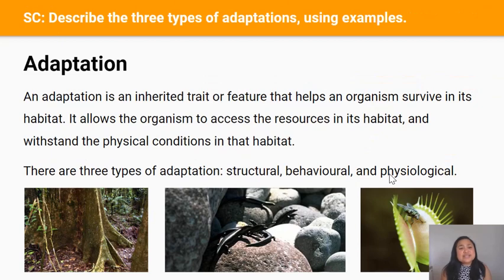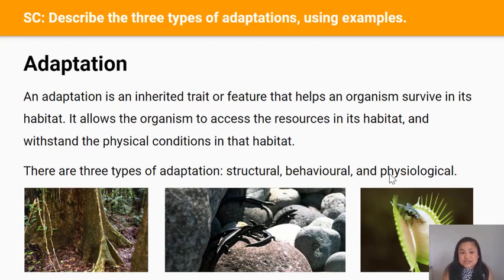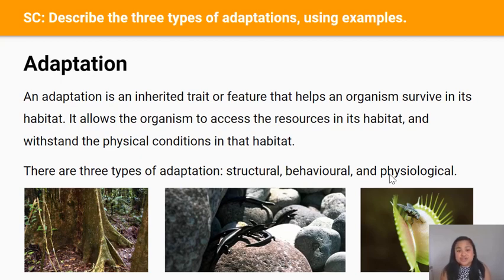So how do these animals actually survive in their habitat? They have adaptations. An adaptation is an inherited trait that gives an organism some kind of advantage in its habitat. It may allow the organism to access resources such as food, or help it withstand physical conditions such as extreme wind or extreme temperature. There are three types of adaptations: structural, behavioral, and physiological.